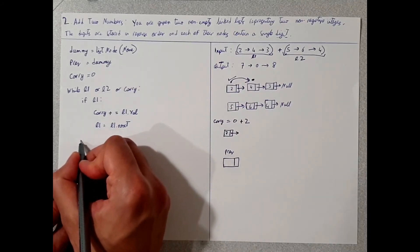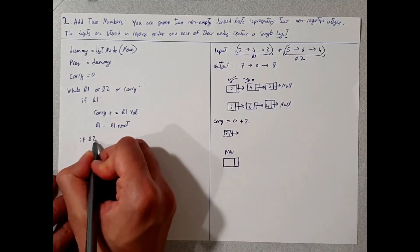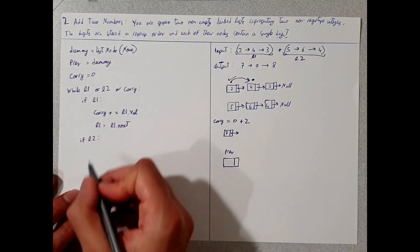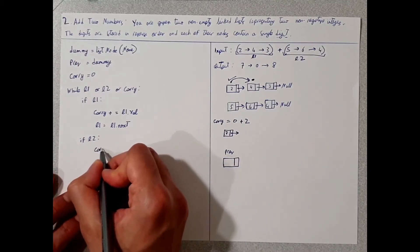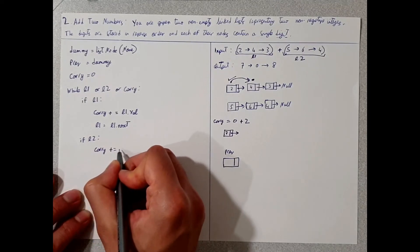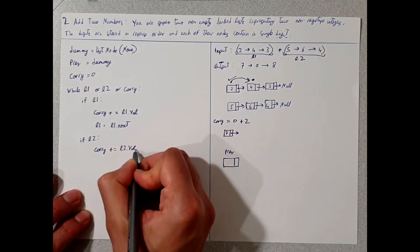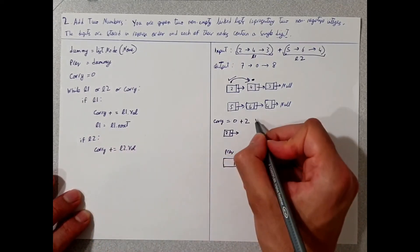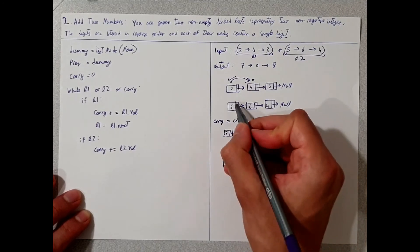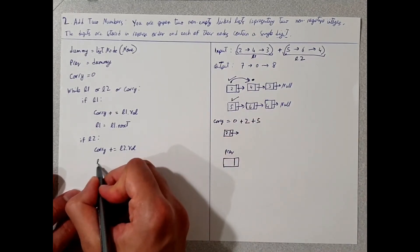Then we're going to do if L2, so if L2 has a value, we will do the same thing, add it to carry. So here it's five, we're going to add this to carry. So we've done this and it's the same thing, move L2 to the next.